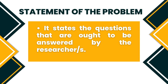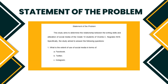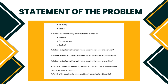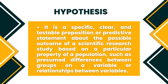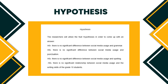The next one is the Statement of the Problem. It states the questions that are ought to be answered by the researchers. This part shows us the questions that should be answered by the researchers at the end of the study. Here's the example of the statement of the problem — we can see sets of questions that are related to the research topic. Now let's proceed to Hypothesis. It is a specific, clear, and testable proposition or predictive statement about the possible outcome of a scientific research study, based on a particular property of a population such as presumed differences between groups or a relationship between variables. This is an example of a hypothesis — the researchers will utilize the null hypothesis in order to come up with an answer.